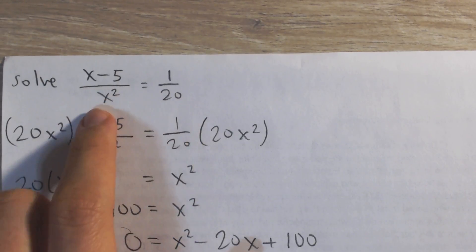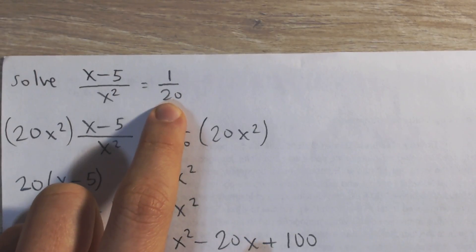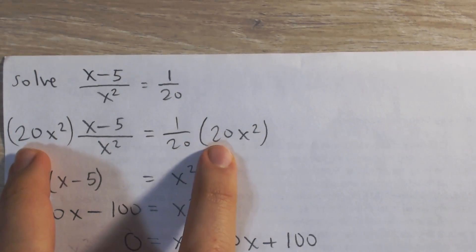And so I'm going to multiply both sides of the equation by x squared, that's going to get rid of this one, and by 20, so that's going to get rid of this one. So I'm going to multiply both sides by 20x squared.